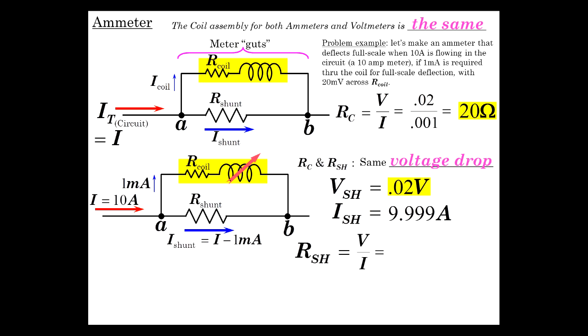Getting the shunt resistance is just a matter of Ohm's Law, V over I. 20 millivolts over 9.999 amps, which is going to be 0.002 ohms. We're not going to carry out a whole bunch of decimal places there. Basically, we're calling this 10. So 0.002 ohms is a very small value of resistance.